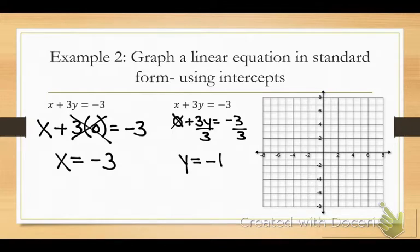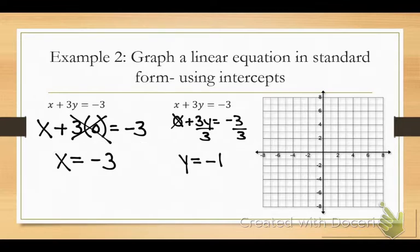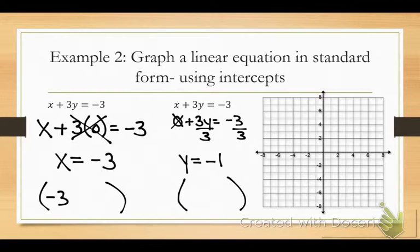One of the biggest mistakes I see is people trying to pair these up like an ordered pair — 'this is negative 3, negative 1' — and they plot the point thinking they're done. That's not what it's saying. It's saying the line crosses the x-axis at negative 3, so I need to make this an ordered pair: negative 3 is x, so it comes first. What did you plug in for y? Zero. So it's negative 3, zero — there's your first ordered pair.